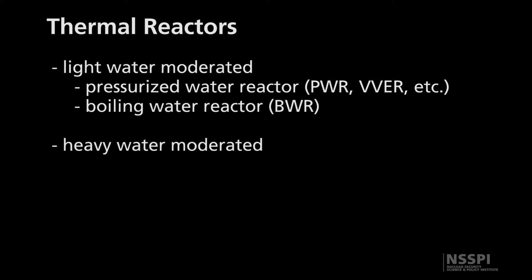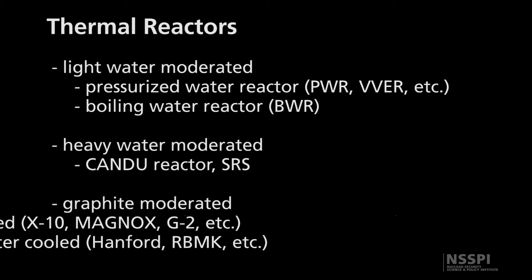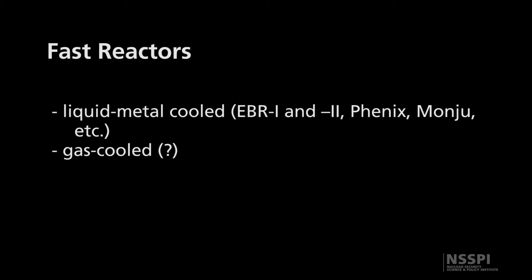There are also heavy water moderated versions of thermal reactors, which use heavy water — a type of water containing deuterium instead of regular hydrogen. Deuterium has a mass about twice that of hydrogen. The most common of these is the CANDU reactor, a Canadian-designed reactor that uses a heavy water moderator and natural uranium fuel. There are also thermal reactors that use graphite as their moderator, with either a gas coolant or a light water coolant. As for fast reactor types, really only one type truly exists: liquid metal cooled reactors. Examples include EBR-1 and EBR-2 in the United States, Phoenix in France, Monju in Japan, and the BN series reactors in Russia. Gas cooled fast reactors have been designed but have not seen much production.